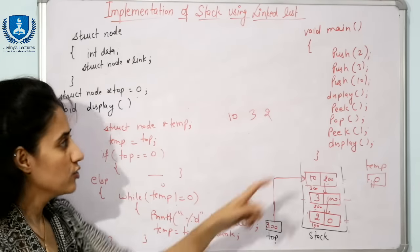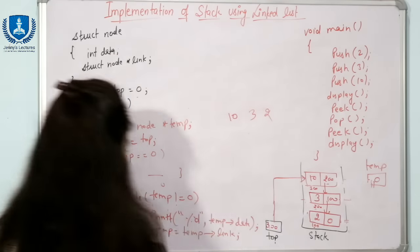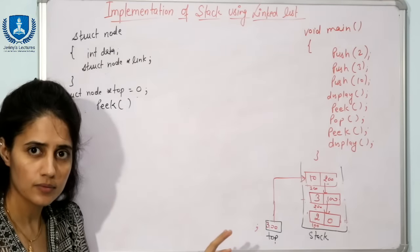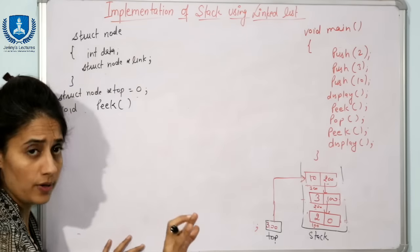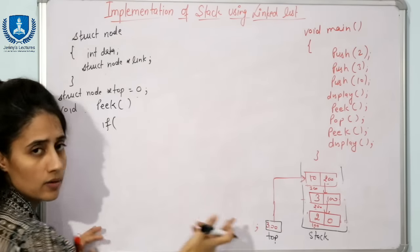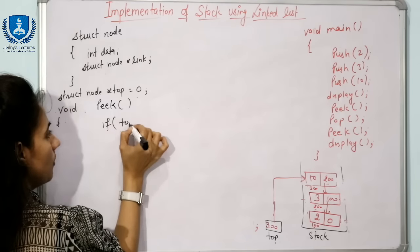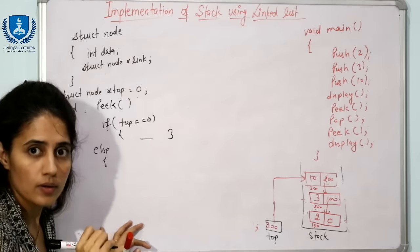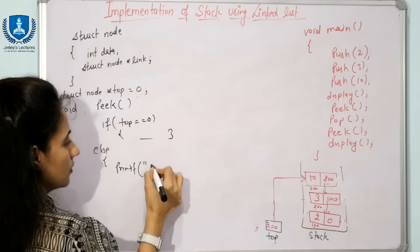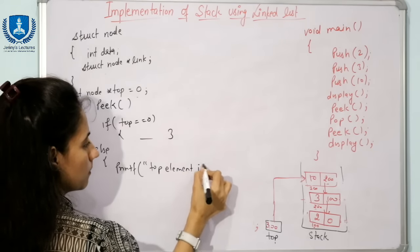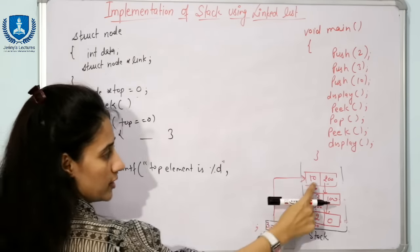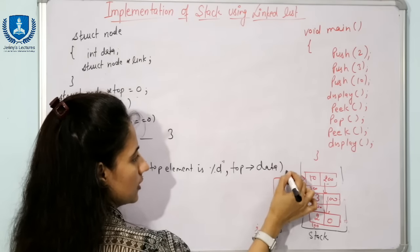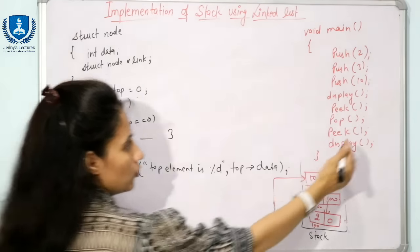The peek function displays the topmost element without removing it. If top equals null, print 'stack is empty'. Otherwise, print top->data. Since top is pointing to the topmost node, top->data gives us the topmost value — in this case 10. That's the complete peek operation.